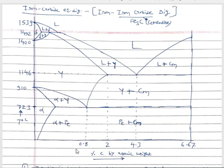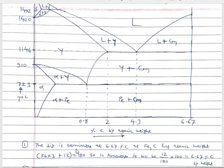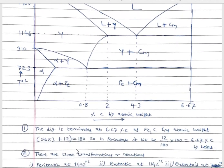On the compositional axis we have percentage carbon by weight. The diagram is not terminated at 100% but at 6.67%, because the diagram is named after iron and iron carbide (cementite). The atomic weight of cementite is: iron 56 × 3 plus carbon 12 = 180. The percentage of carbon in cementite is 12/180 × 100 = 6.67% carbon by weight. That's why the diagram is terminated at 6.67%.